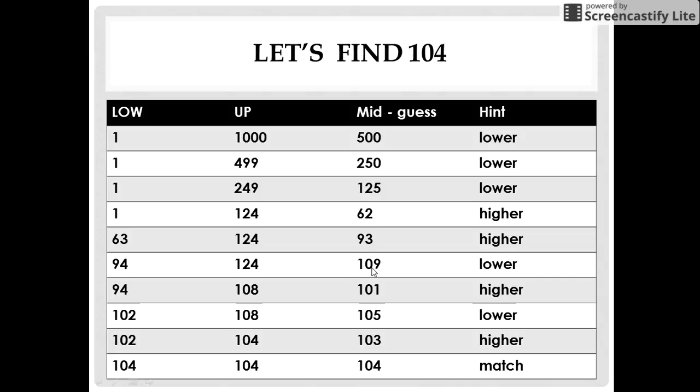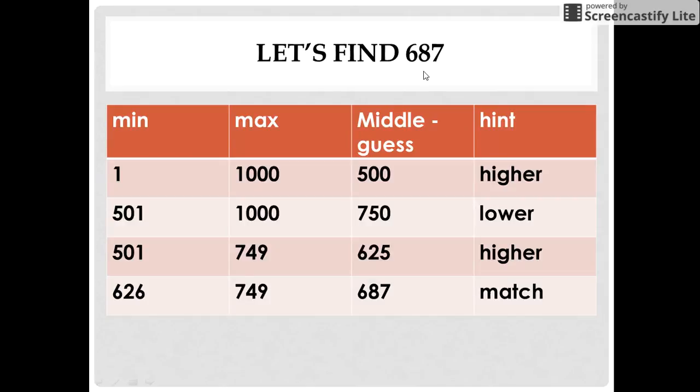Let us see another example. Let us suppose that the key number is 687. Now, the middle number of 1 and 1000 is 500. So the hint given to us is higher.